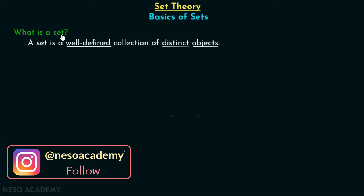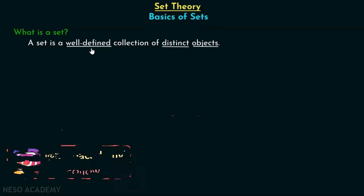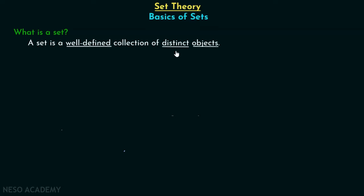What is a set? A set is a well-defined collection of distinct objects. I want you to focus on these three terms: well-defined, distinct, and objects. If we somehow understand these three terms, then there will be no problem in understanding the concept of a set.